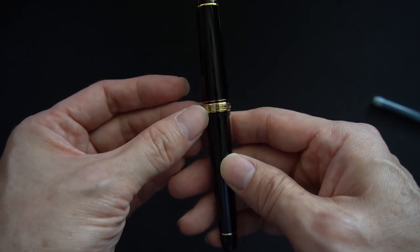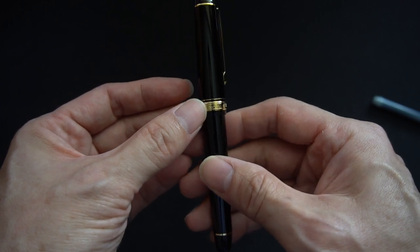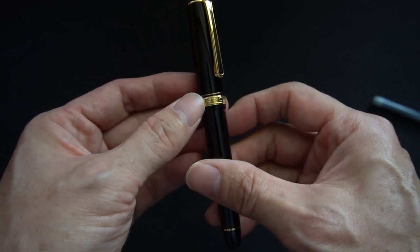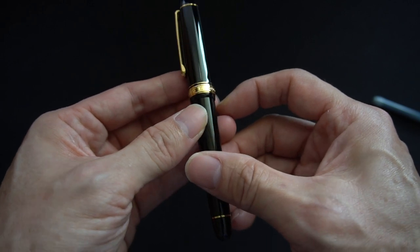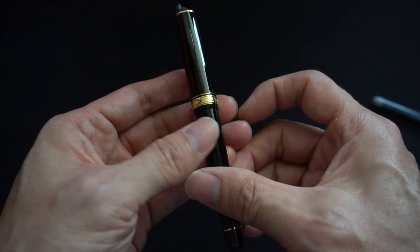This is like my first higher end gold nibbed pen by Platinum. So I'm just trying to read out what it says here. It says Made in Japan, which is nice, 3776 Century, in Platinum.